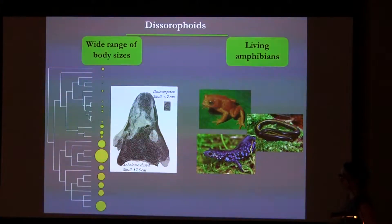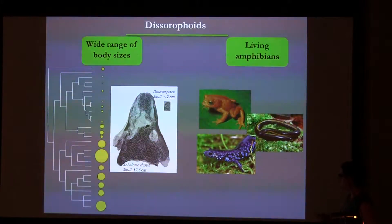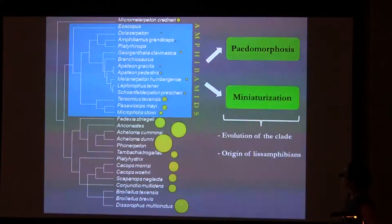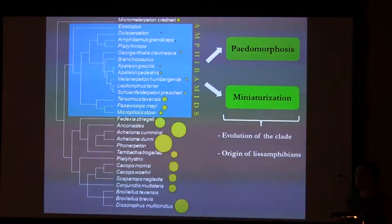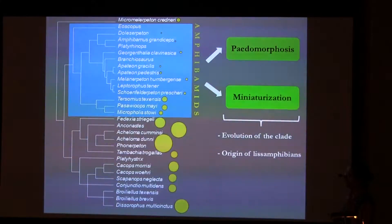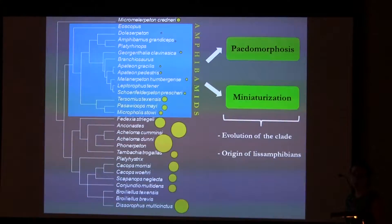Visorophoids are also very important because modern amphibians are supposed to have originated within this clade. Within visorophoids, the smallest forms also form the clade of amphibamids, and amphibamids have been described both as pedomorphic and as miniaturized species.